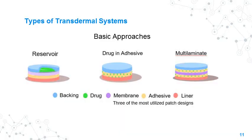Transdermal drug delivery has made a lot of progress in the past decade and is now classified into two types: passive transport-based TDS and active transport-based TDS. A few approaches for active transport-based TDS are microneedles, iontophoresis, sonophoresis, and electroporation. The iontophoretic fentanyl and sumatriptan patches with trade names Ionsys and Zecuity, which were approved by the US FDA, have now been discontinued due to safety issues. Almost all US FDA-approved transdermal products are based on passive transport.